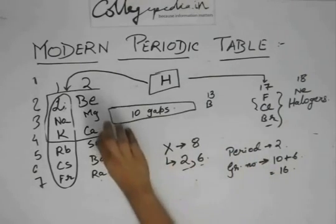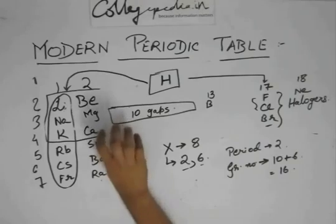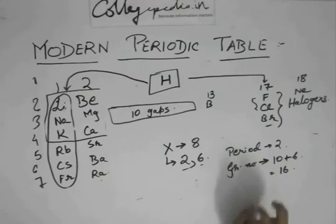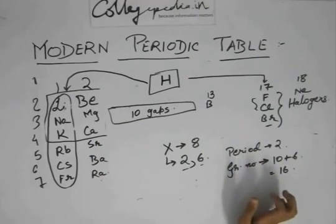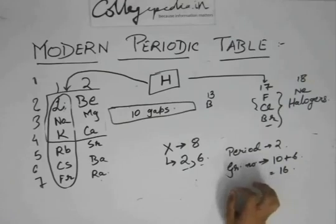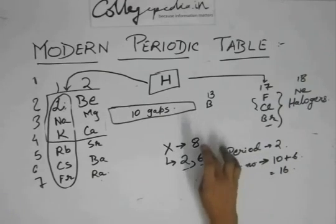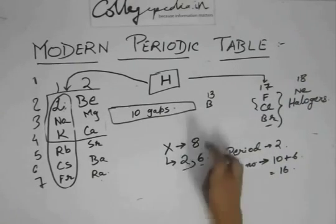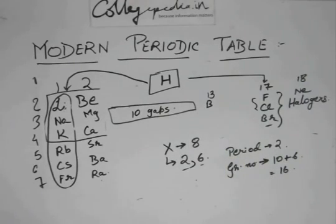You have to learn that. Till calcium, you need to know the atomic numbers of each and every element. The atomic number of oxygen is eight, so this has to be oxygen.